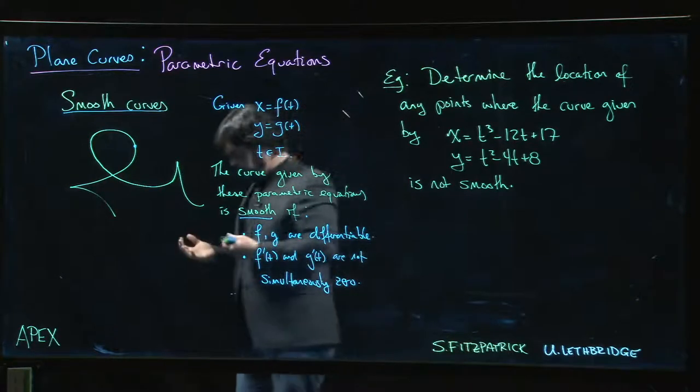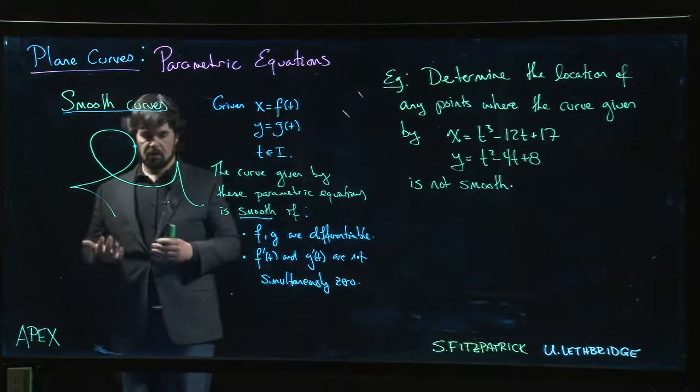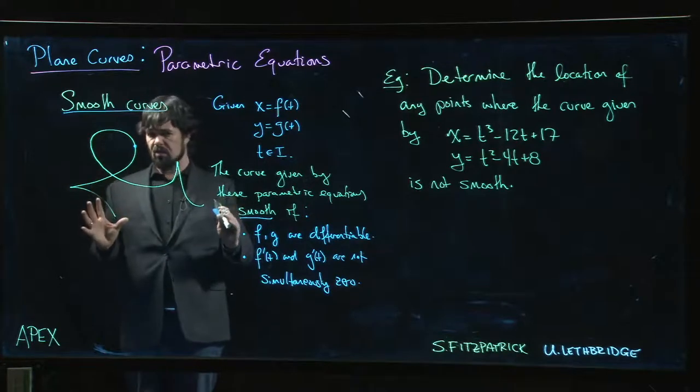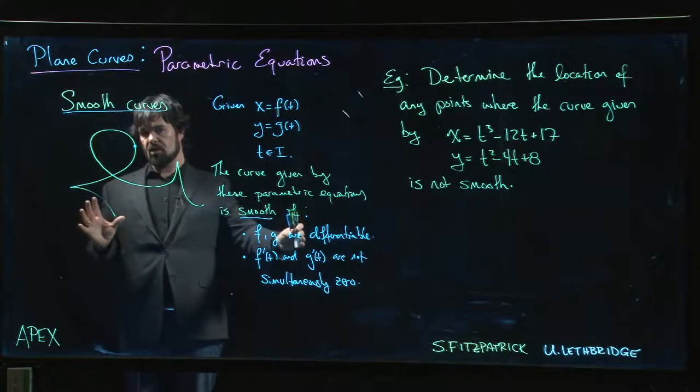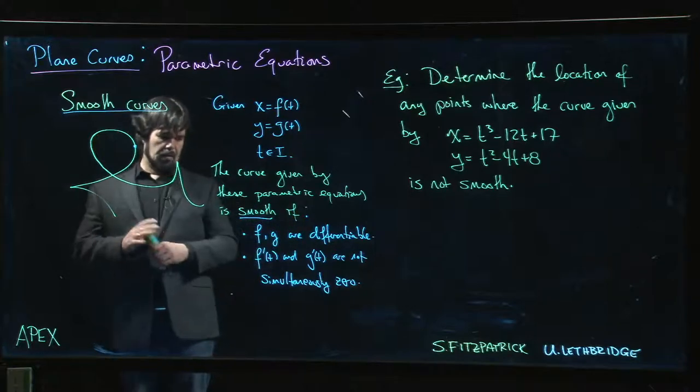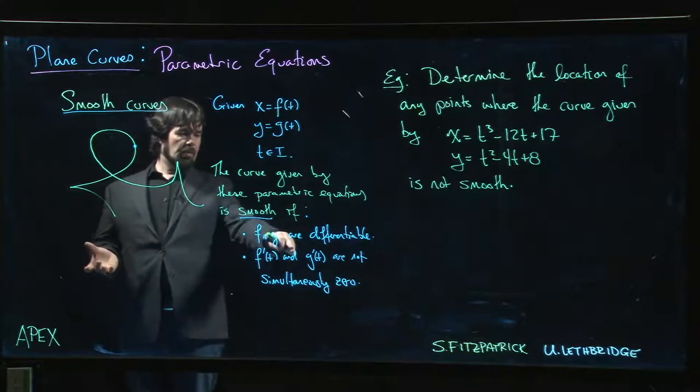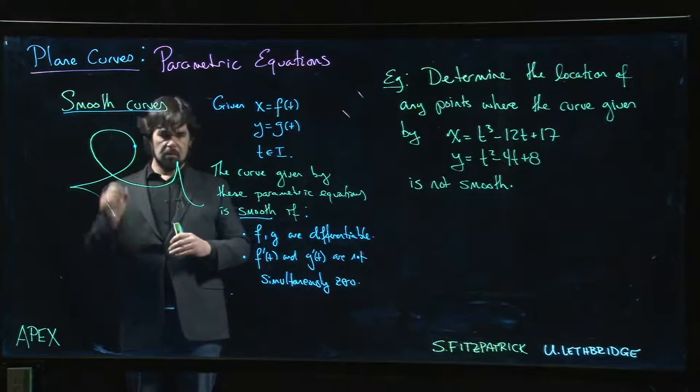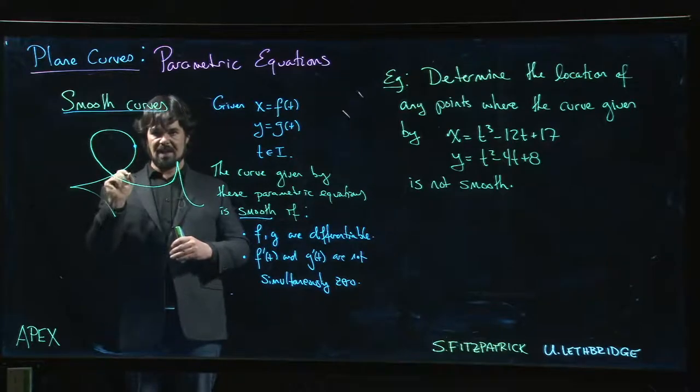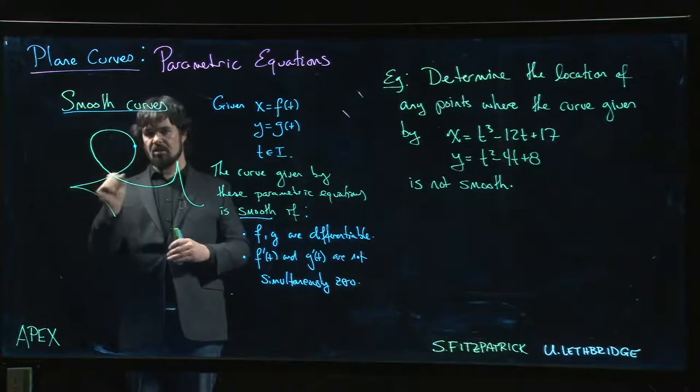If we think in terms of velocity, if f prime and g prime are simultaneously zero, that means you're not moving. X isn't changing, y isn't changing, you're at a stationary point.